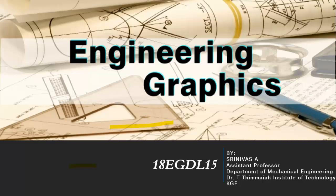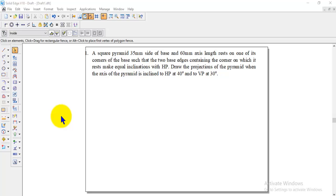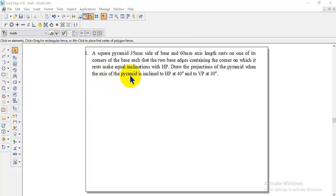Welcome back to engineering graphics class. In this session, we are going to discuss how to solve the projection of solids problem using Solid Edge V18 software. A square pyramid with 35mm side of base and 60mm axis length rests on one of its corners of the base such that the two base edges containing that corner make equal inclination with HP. Draw the projections of the pyramid when the axis is inclined to HP at 40 degrees and to VP at 30 degrees.